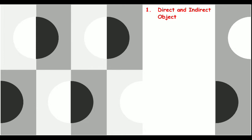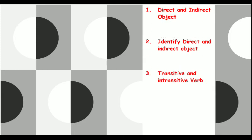Good morning everyone, welcome back to the online class. Today is a recap session, which means we are going to revise what we have seen last week and yesterday. The topics we are going to discuss today are: direct and indirect object, how to identify them, and transitive and intransitive verbs, including how to identify transitive and intransitive verbs in a sentence.